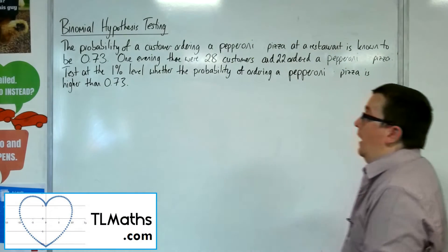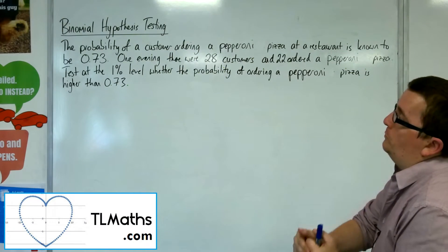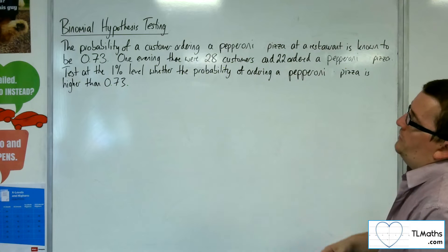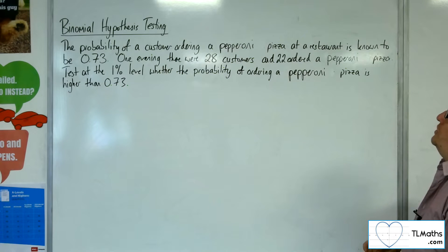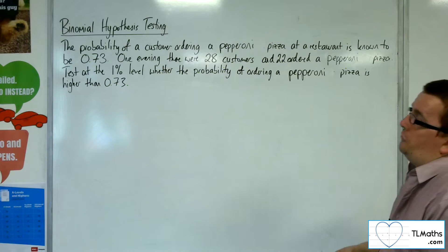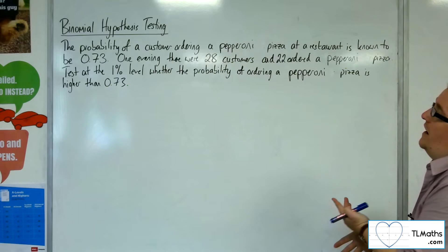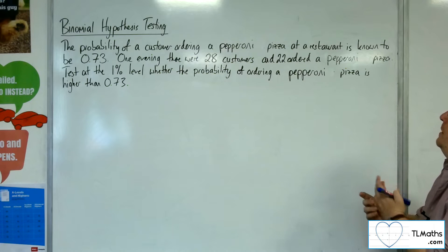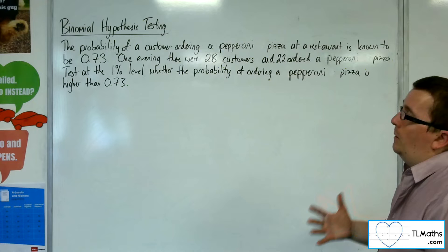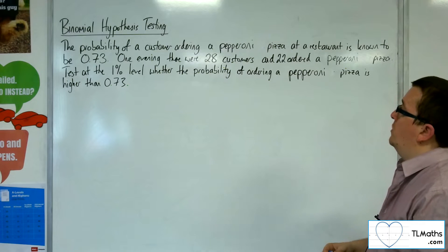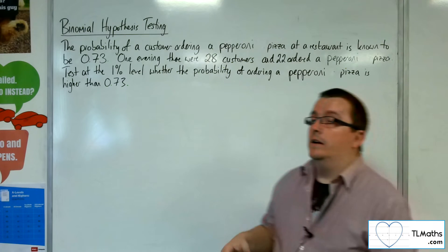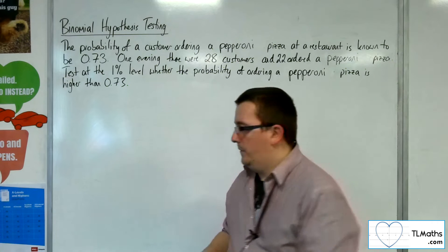In this video, we're going to look at another binomial hypothesis test. The probability of a customer ordering a pepperoni pizza at a restaurant is known to be 0.73. One evening there were 28 customers and 22 ordered a pepperoni pizza. Test at the 1% level whether the probability of ordering a pepperoni pizza is higher than 0.73.